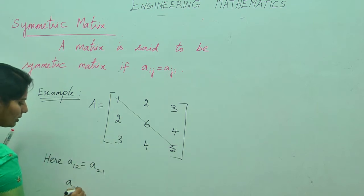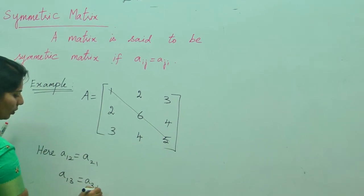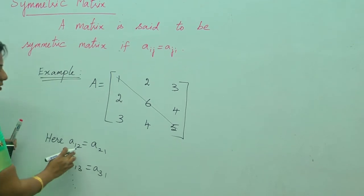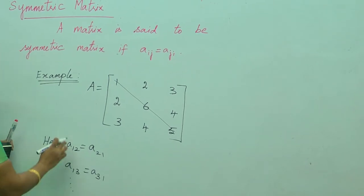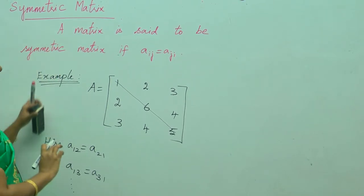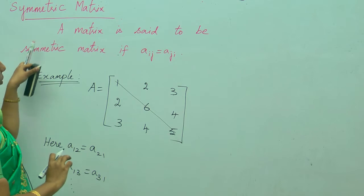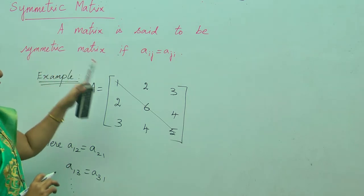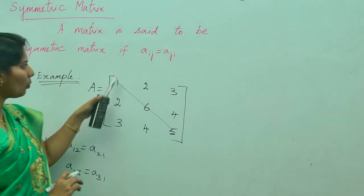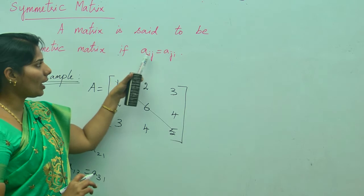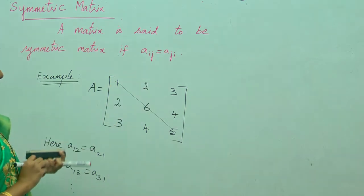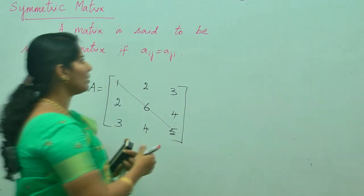A_13 equals A_31, and so on. This is what we call a symmetric matrix. A matrix is said to be symmetric only if A_ij equals A_ji.